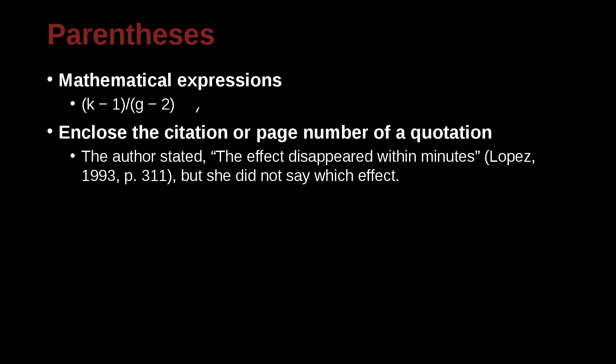You use it to include citation page numbers or page numbers for quotations. So for example, here, I write a quotation. The author stated, quote, the effect disappeared within minutes. Now, please note, we already studied this. A comma here, because I'm going to begin a quote. This is an introduction phrase. And then here, I have my quotation mark. This is exactly copied from the person's writing. Who wrote this? And then here, I have my citation. Lopez, comma, 1993, comma, page 311. So here, we have the parentheses that separate that.